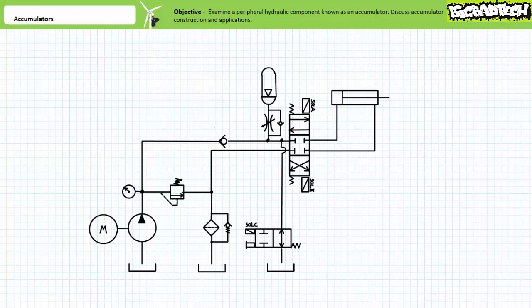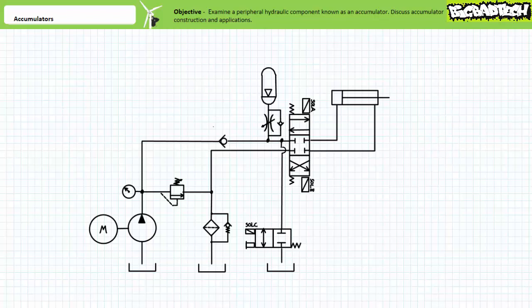Consider this subtle variation: a solenoid-operated, two-way, two-position directional control valve spring offset into the closed position. The spring offset ensures the accumulator remains charged even during the loss of electrical power. Only an electrical signal to the solenoid can open the valve and dump the accumulator to tank. Such a valve might be used to maintain the stored energy in the accumulator for emergency backup and shutdown procedures. Given an accumulator remains charged even during loss of electrical power, you often find a manual override on solenoid-operated valves allowing a technician to override the spring offset normally closed state and dump the accumulator to tank.